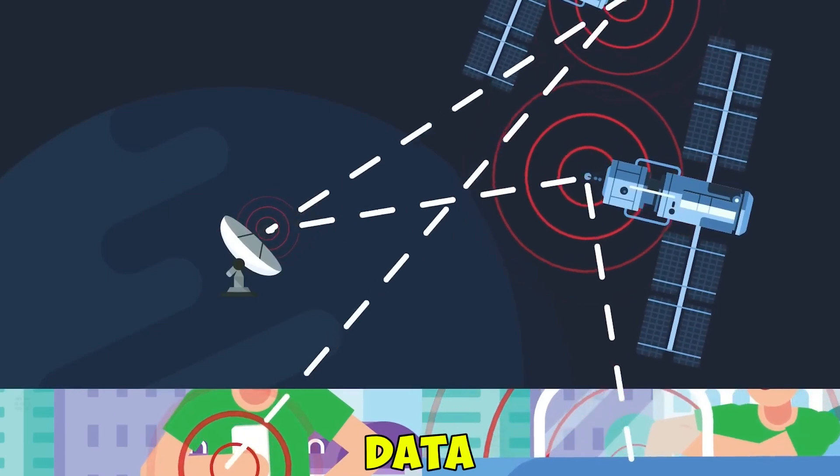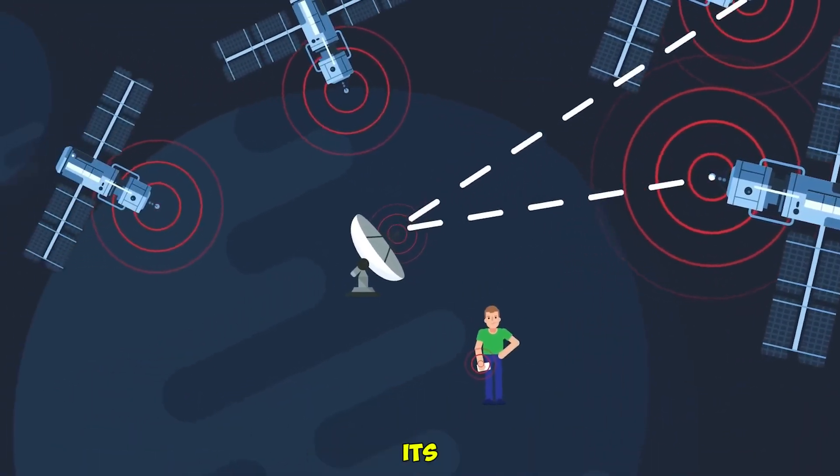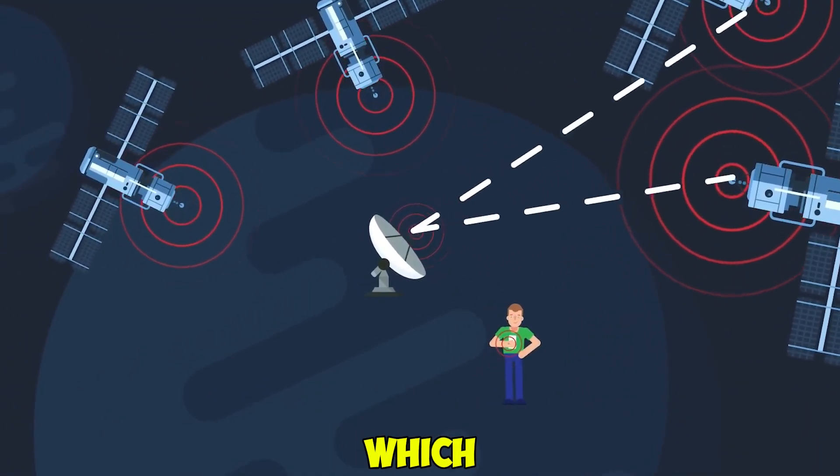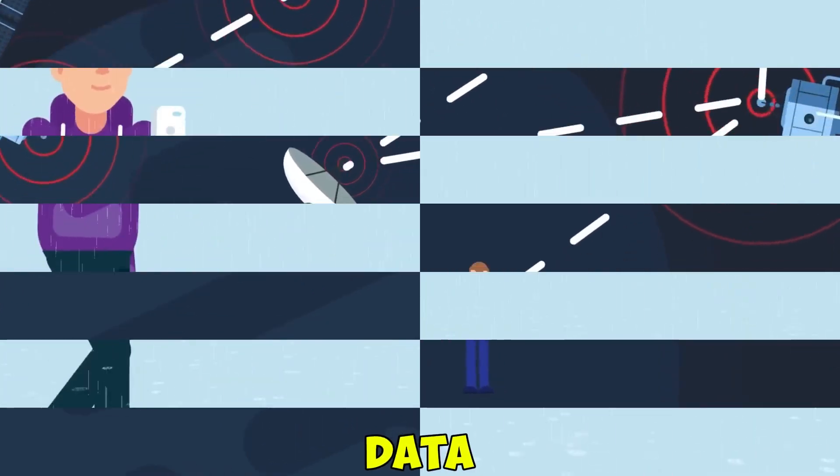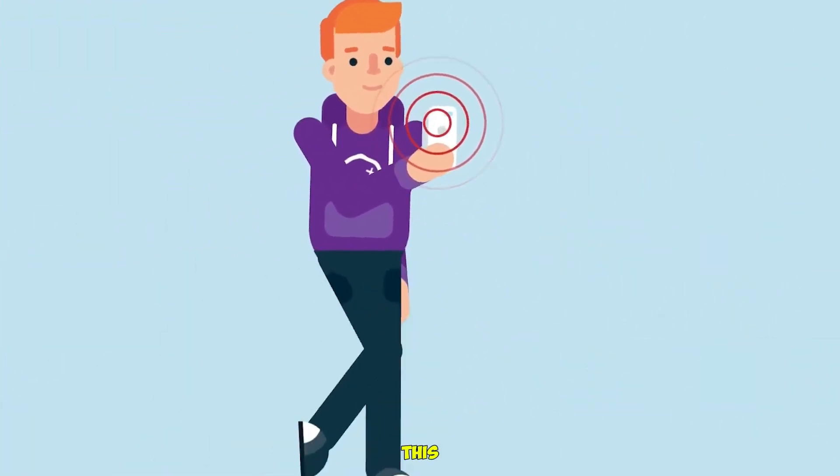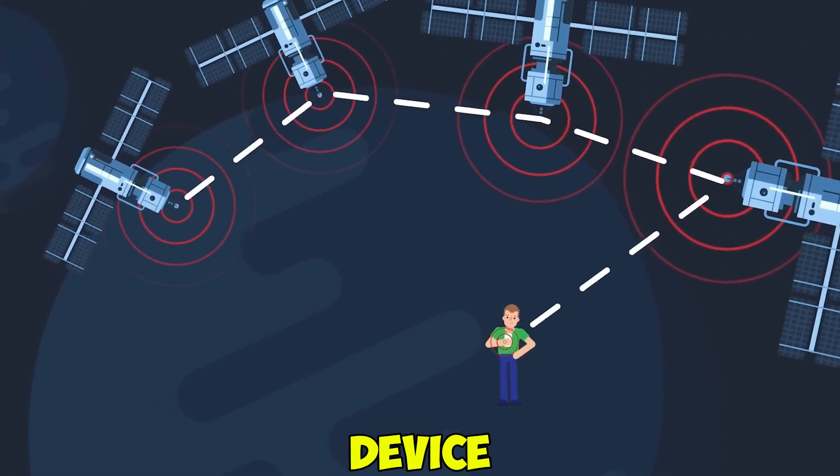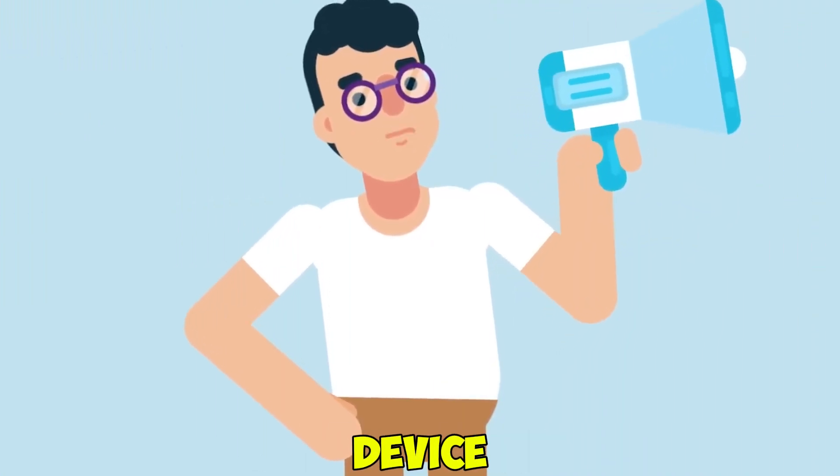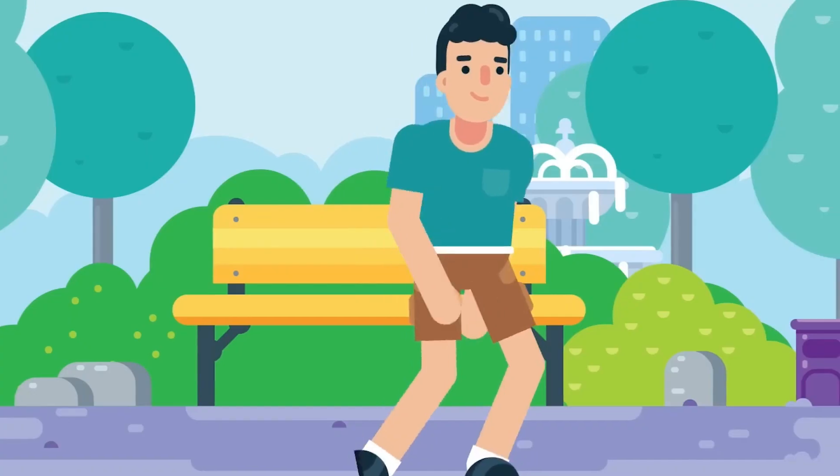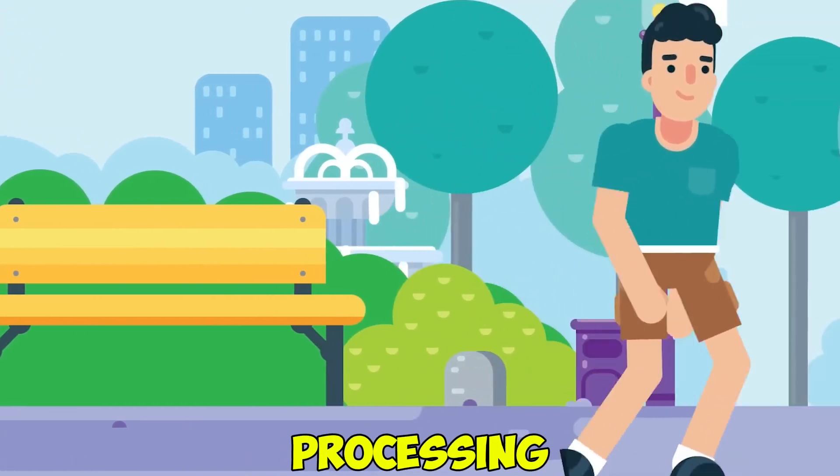Each satellite transmits data in a continuous manner which comprises its precise location and the time at which the satellite transmits this data. The satellite services conclude at this point. The remaining tasks are completed by the tiny GPS-enabled device in your possession. On your device, hardware for the acquisition of satellite data and software for decoding and processing would be present.